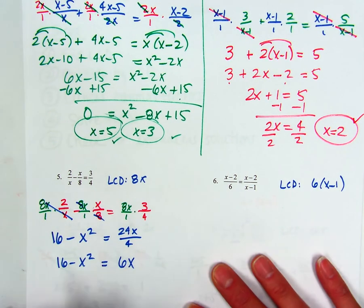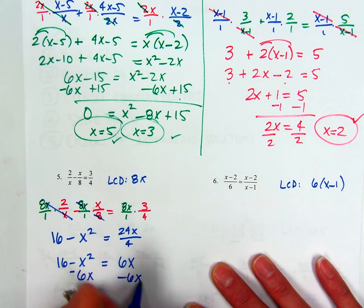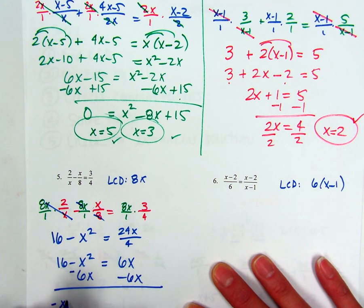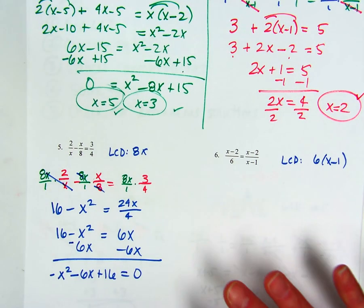All right, so now I'm going to move everything to one side. I'm going to just subtract my 6X, so I get negative X squared minus 6X plus 16 equals 0. And then I'm going to use my quad program again. So X is negative 1, B is...